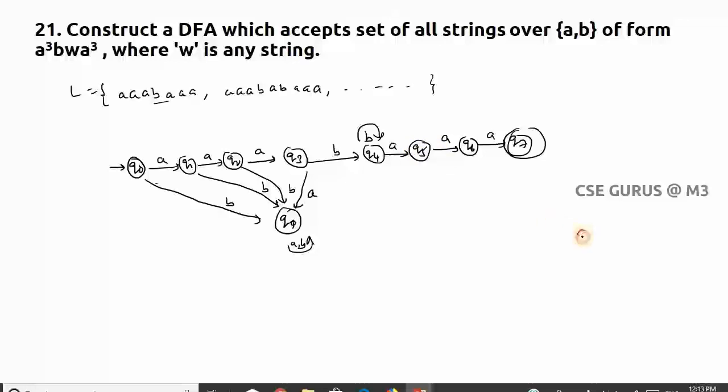Now q5: if it is a, it is redirecting towards final state. But if I get b here, so after a single a if I get a, I need to check for one more a. But after a, if I get b, I need to check for three a's, so that's why it has to come to q4 only, because at q4 it is searching for three a's.